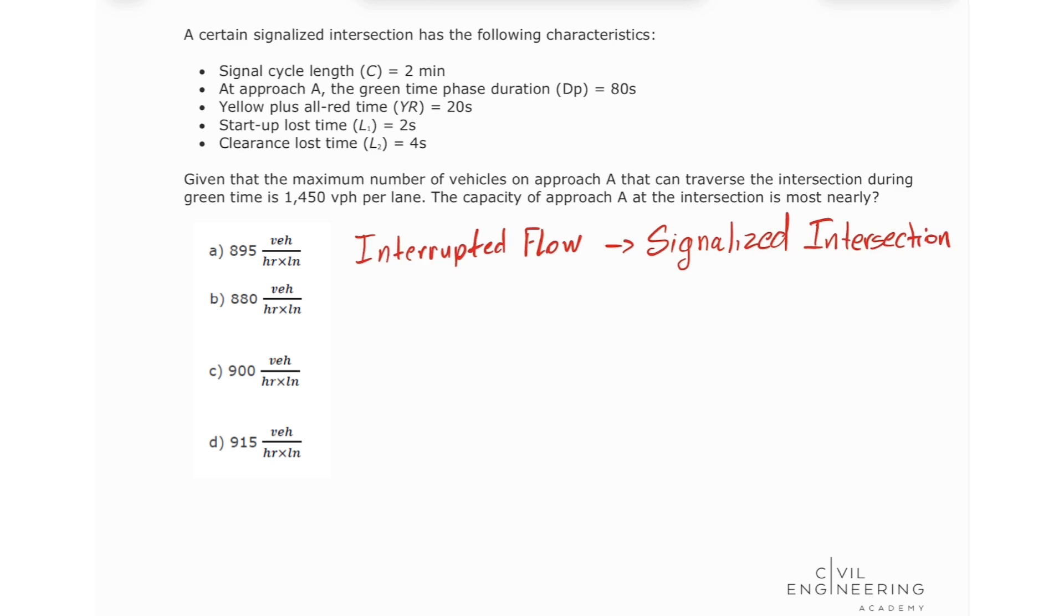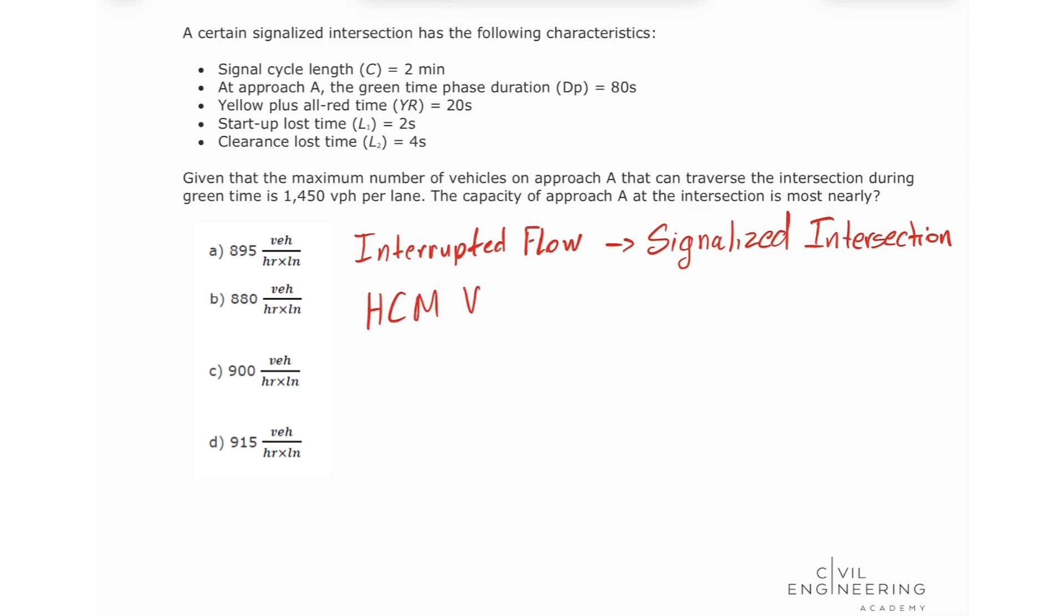So we are going to be looking in our Highway Capacity Manual, volume 3, and we are going to look at equation 19-3. Just as a reminder, this equation is not available in our NCEES reference handbook. This equation gives us the effective green time. So the equation says that G equals Dp, which is the phase duration, minus L1 minus L2.